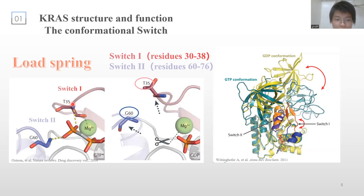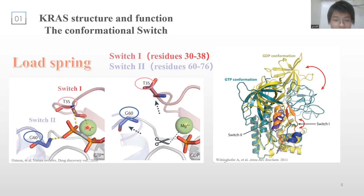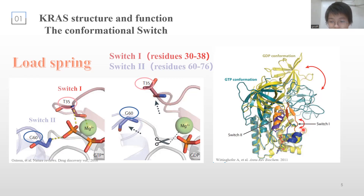G proteins have a universal switch mechanism. The picture depicts the loaded-spring mechanism in which red represents the switch-1 region and blue indicates the switch-2 region. We can see that T35 and G60 at the spring angle interact with the gamma phosphate of GTP, tightening the conformation of KRAS. However, upon hydrolysis of GTP, these interactions disappear and the switches recoil into their inactive state.